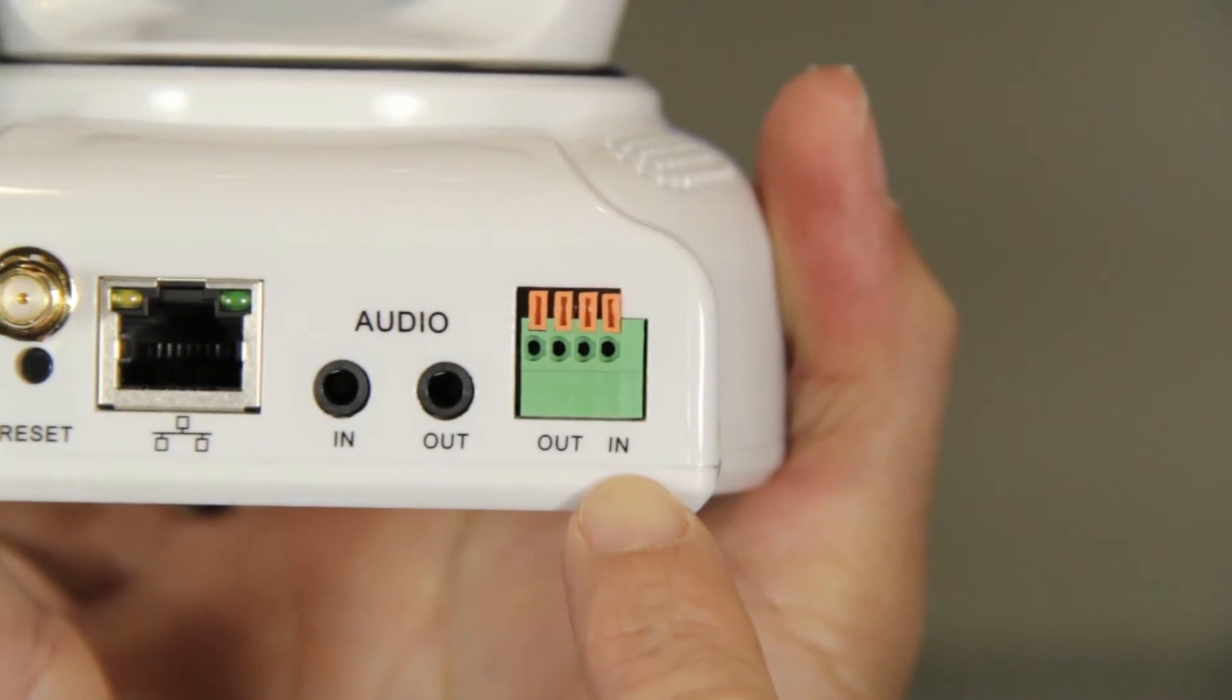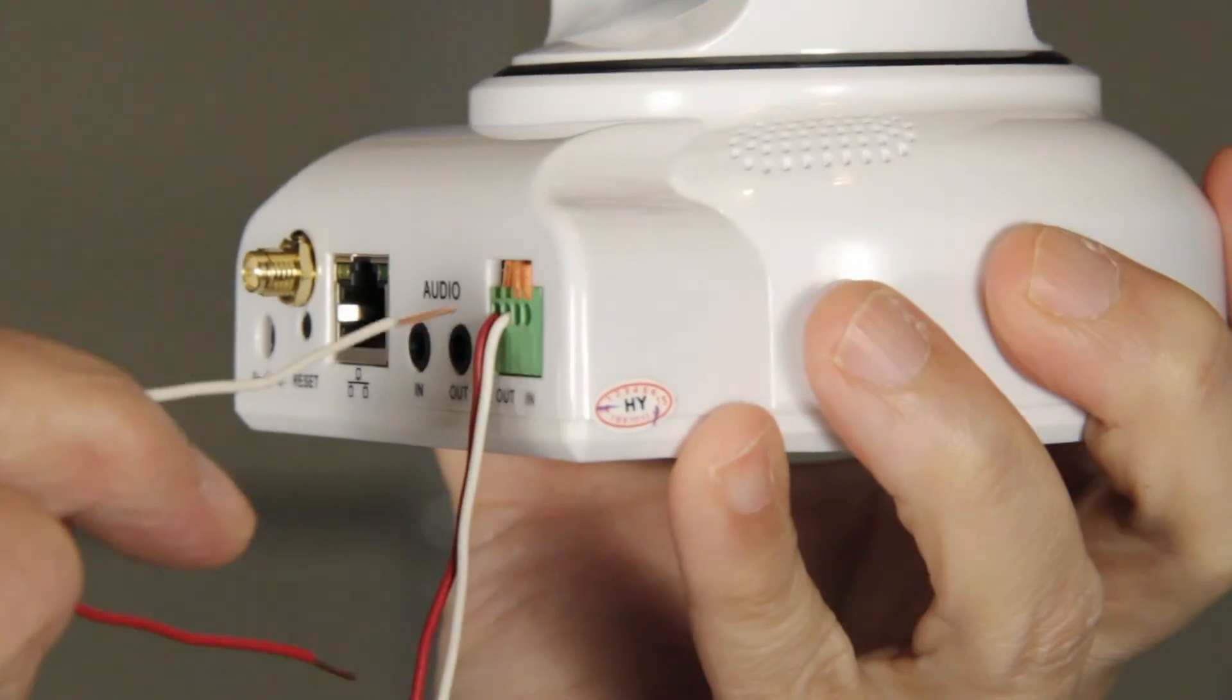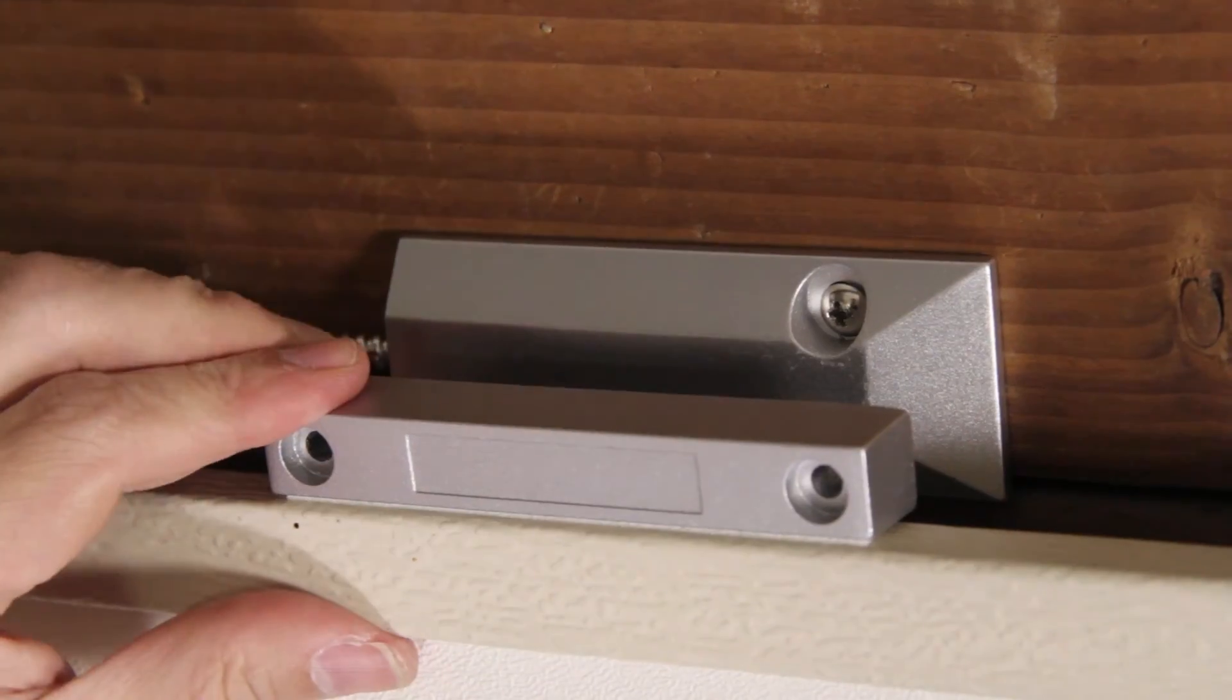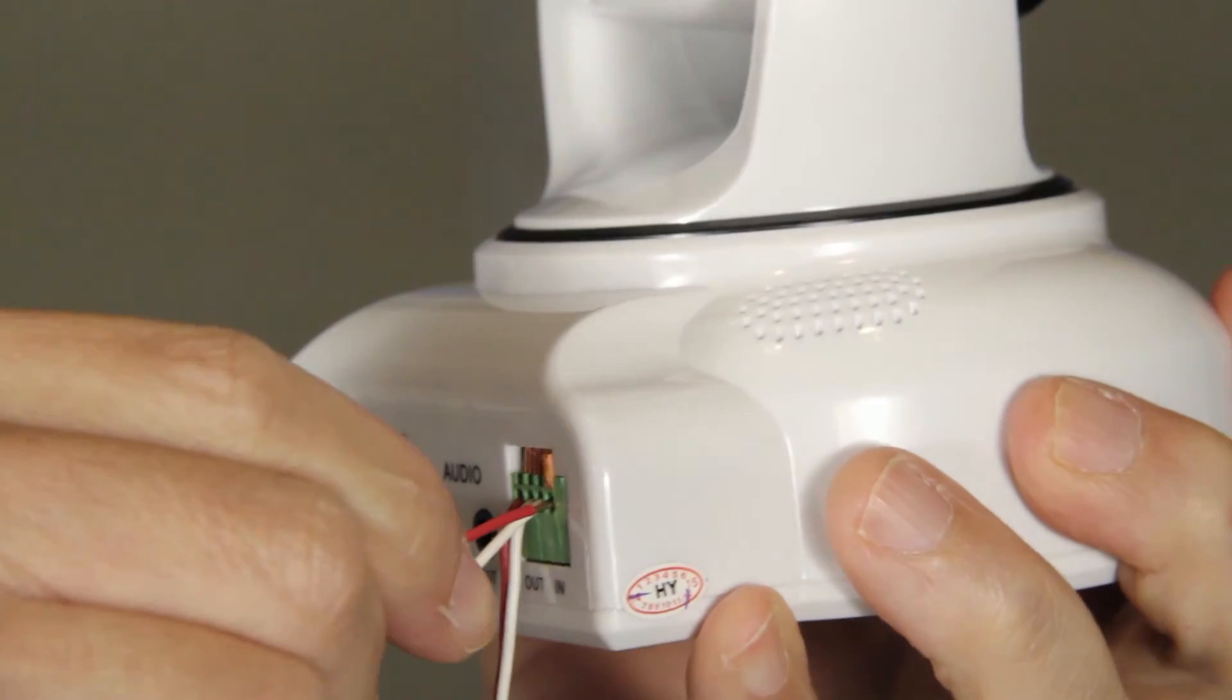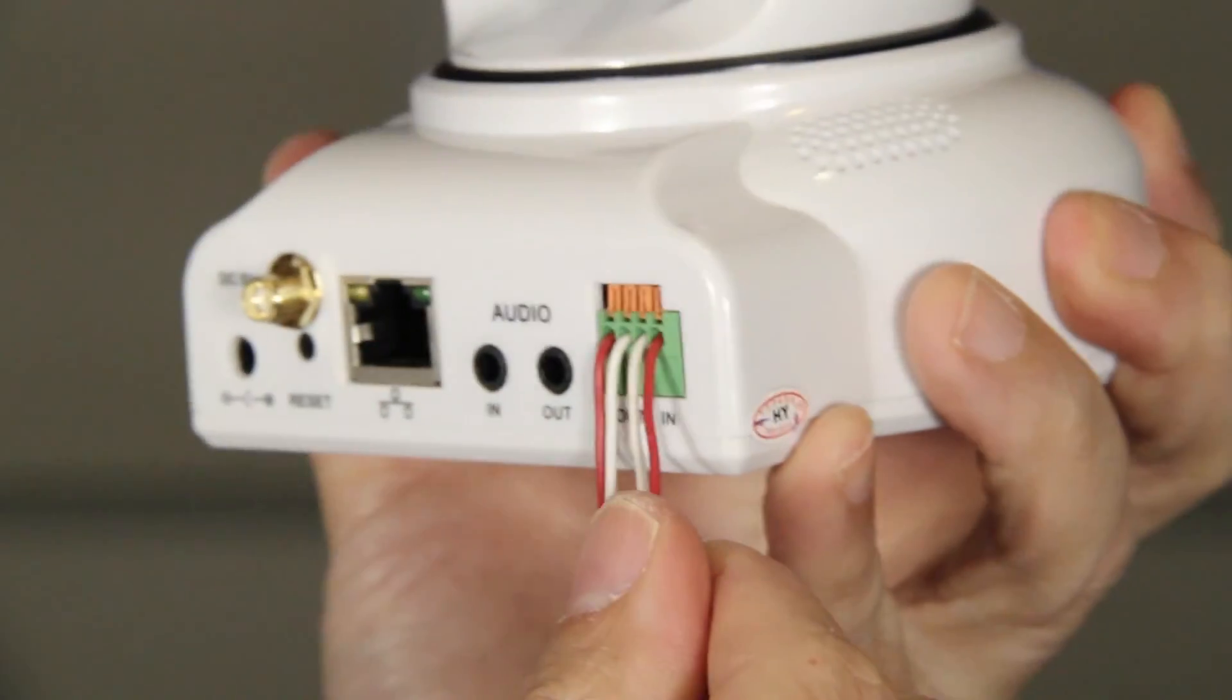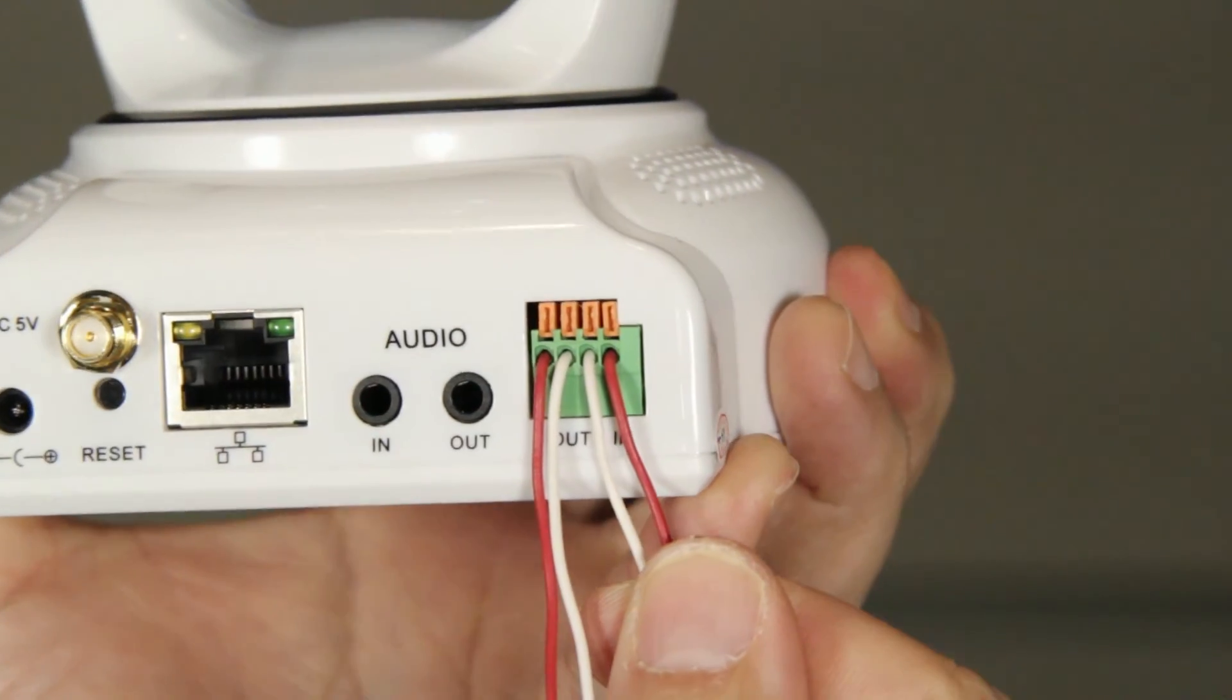These two wires are going to go in the import. Notice the other two wires were from the garage switch, and these two wires are from your magnetic switch. And just like before, insert the wires into the hole until the orange lock is pushed in. Again, the color order does not matter.